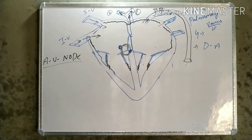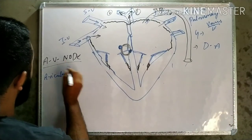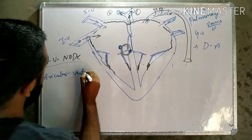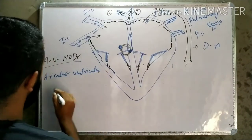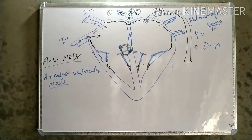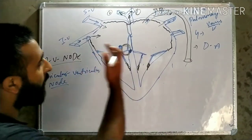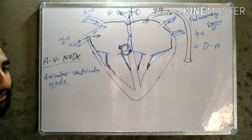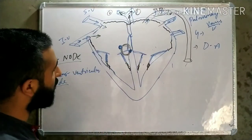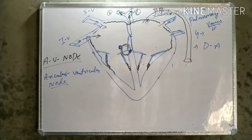The AV node can also be called the auricular ventricular node. This nodal tissue is present in between the atria - specifically between the right atrium and the right ventricle. That is why it is known as the auricular ventricular node.